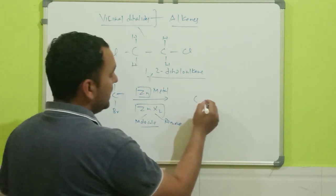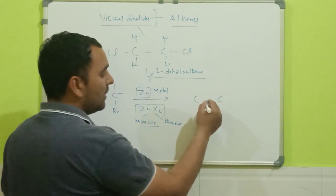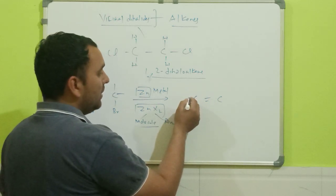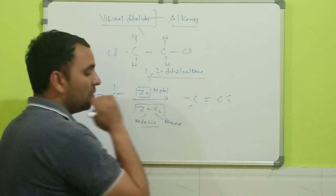And it will form an alkene. See, two adjacent carbon atoms and in between double bond will be there. Remaining will be satisfied with the hydrogen atoms. So this way alkene formation will take place.